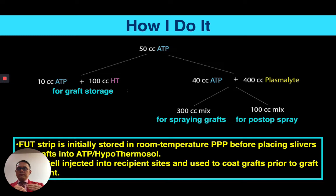With ATP hypothermosol, I've seen a faster growth rate. Before PRP and ACell, I was seeing grafts grow at about six to eight months. When I added PRP and ACell, it was five to six months. Now I'm seeing as early as three to four months with ATP hypothermosol. The grafts look even better transplanted because there's some mechanical injury during placement, and this extra benefit helps grafts survive better, especially for inexperienced staff just starting out.